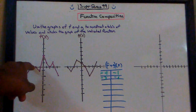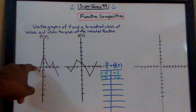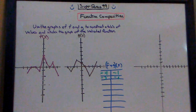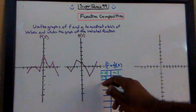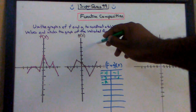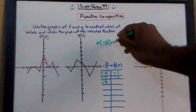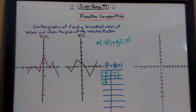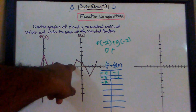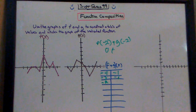f of negative 2 — here's f, x is negative 2, y is 0. So f of negative 2 is 0. Whereas g of negative 2, right there, is 0. So f of negative 2 plus g of negative 2 is 0 plus 0. The y corresponding value of negative 2 on the g function is also 0, and 0 plus 0 is 0.